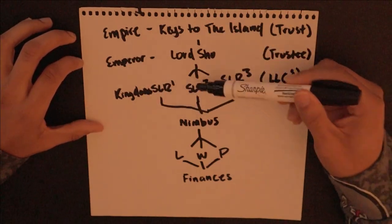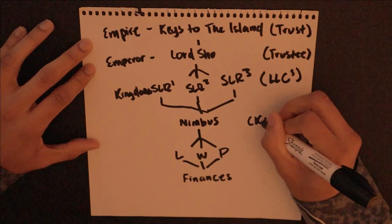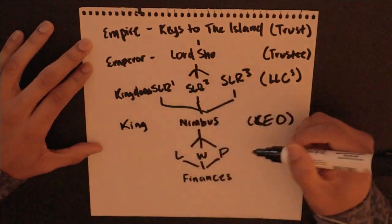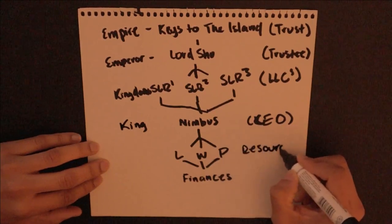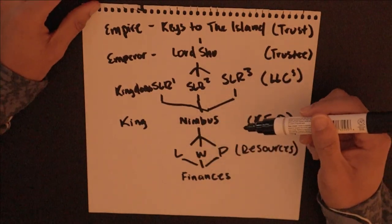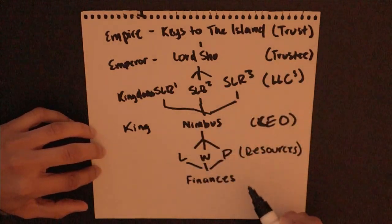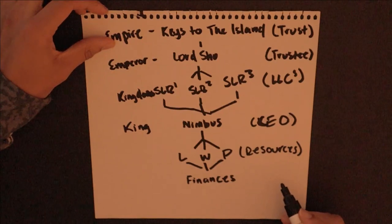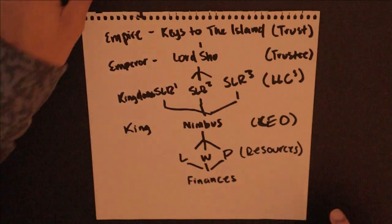You can take this same method for anything and break it down into steps. So here we have our King, which is King Nimbus or a CEO. And then we have our resources, which is land, water, people. Now resources vary — it just depends on what exactly you're trying to do. So resources labeled. And then the next thing is our finances. So how do we get our finances? Well, that's a process in its own and it's going to require me to get another sheet of paper.